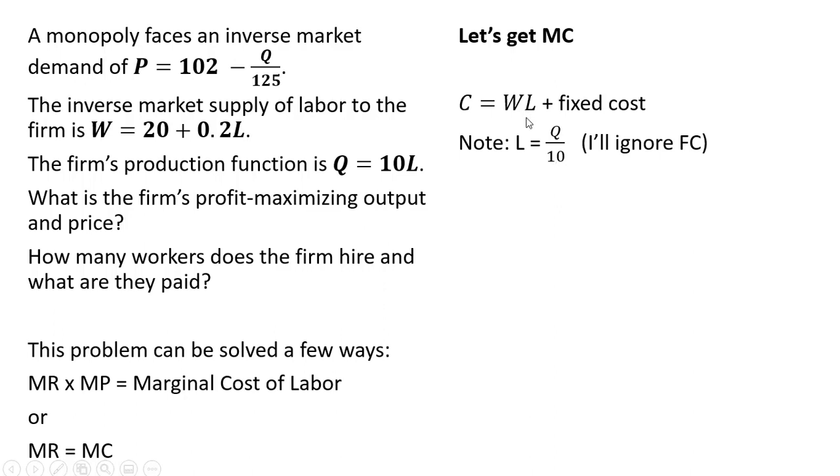I'm going to make a substitution now into the cost function where I have an L. I'm going to replace that with Q divided by 10, and now I'm going to ignore the fixed cost going forward. Now we're going to make another substitution for W. I'm going to plug in this 20 plus 0.2L. One more substitution. We have another L here, so like before, we're going to replace this L with the Q divided by 10.